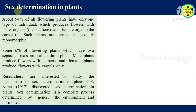Plants. About 95% of all flowering plants have only one type of individual which produces flowers with both male organs — that is the stamen — and female organs like the carpel. Such plants are termed as sexually monomorphic.